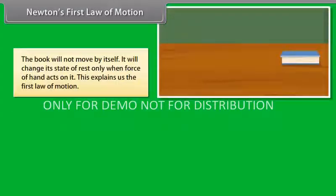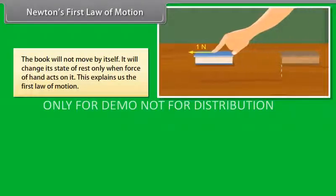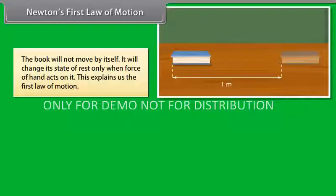Newton's first law of motion: The book will not move by itself. It will change its state of rest only when force of hand acts on it. This explains the first law of motion.